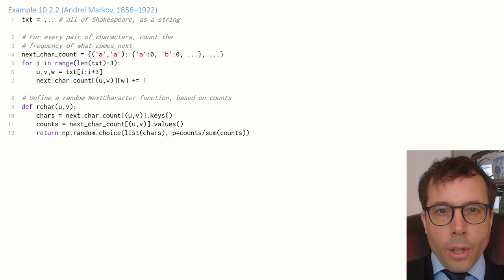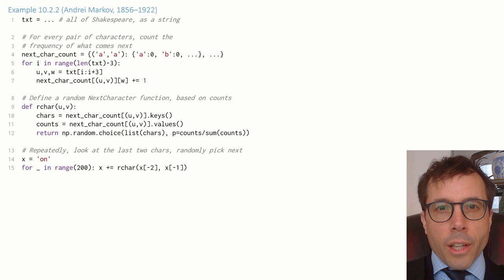Next, using these counts, I'm going to define a random next character function. This function takes in a pair of characters, then it looks at next_char_count, and it picks a random character to follow them based on the frequencies in the text.